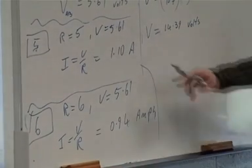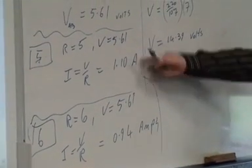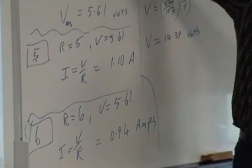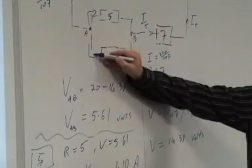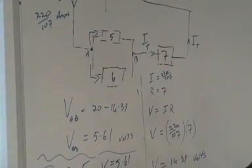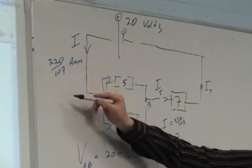And now to double check that I'm just about finished, what should these two add up to? The total current. Yeah, I've got one current going this way, I've got one current going that way, so if I add the two of these up together I get 2.04.